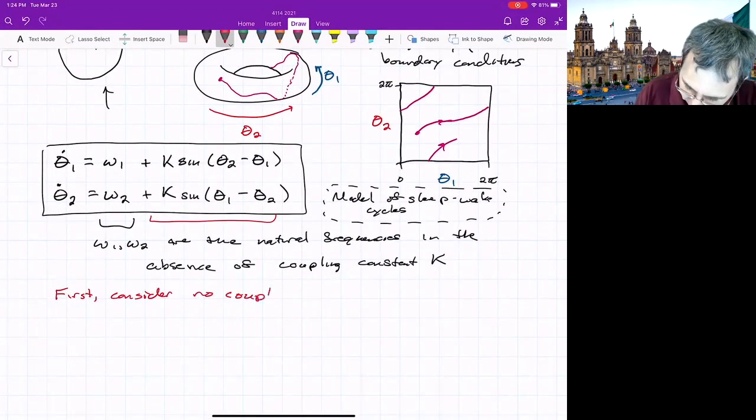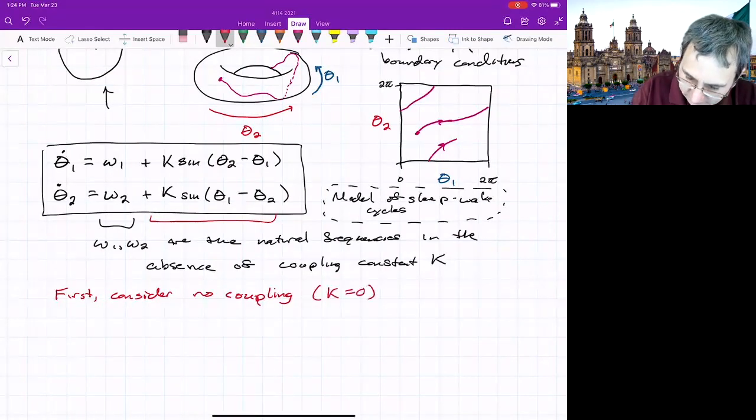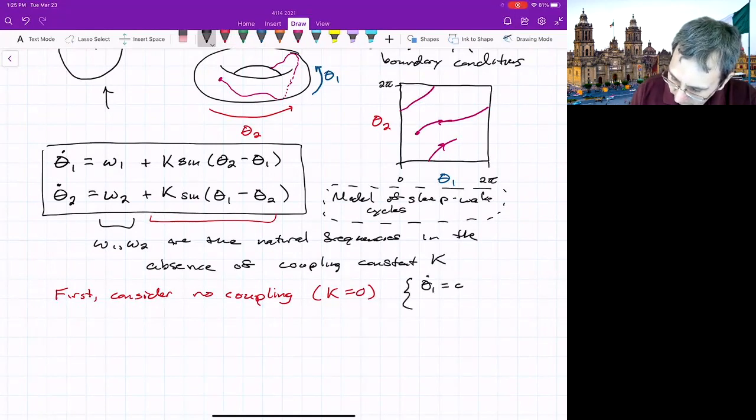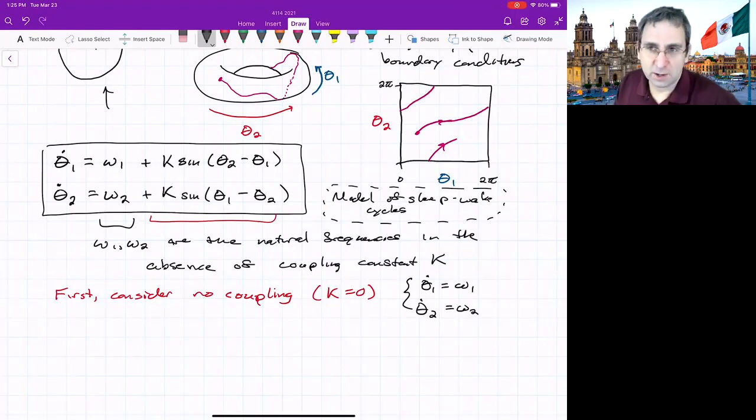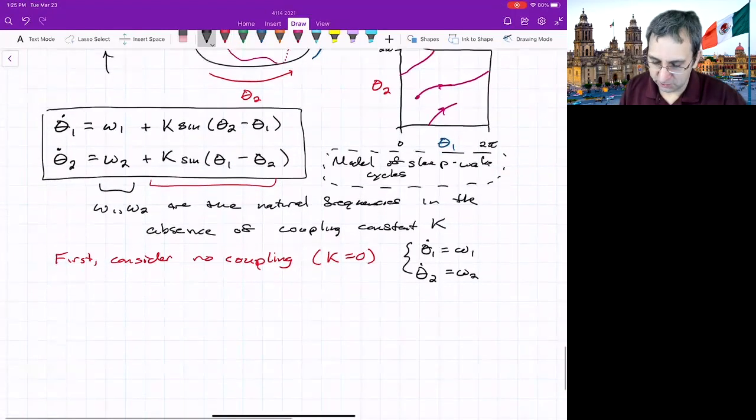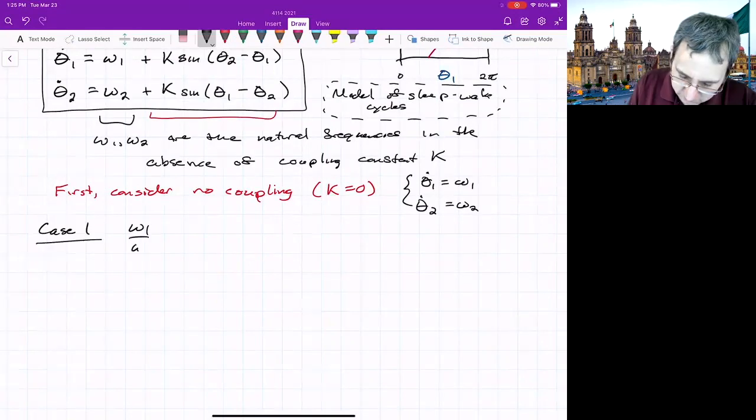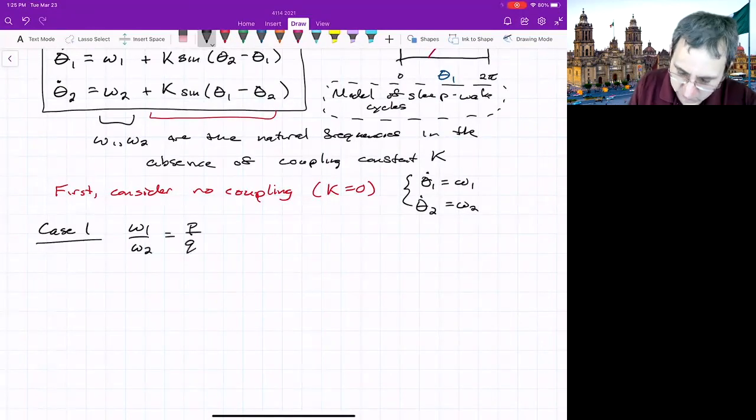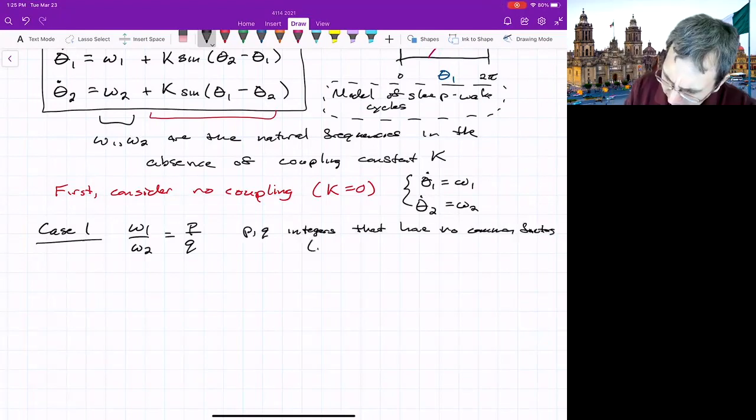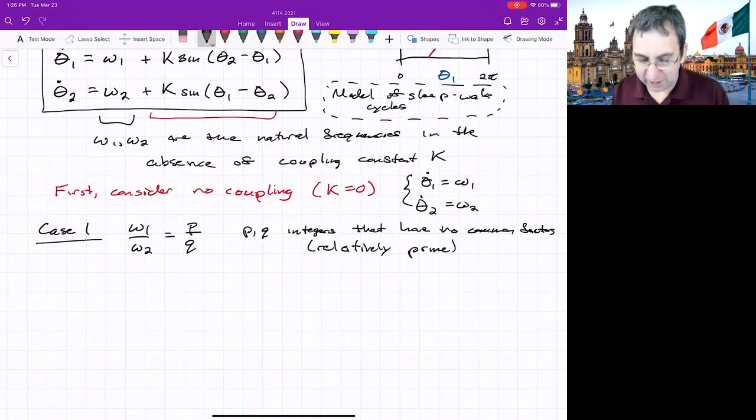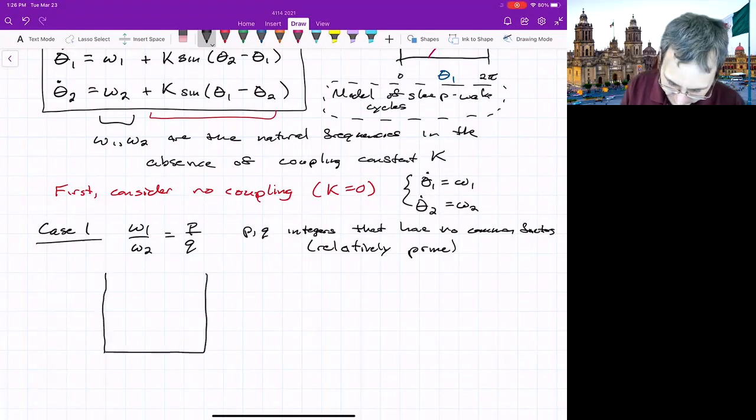We'll first look at the case of no coupling and describe that and then include some coupling. So first we'll just consider no coupling. That means k equals zero. And this becomes really simple. We've got theta one dot equals omega one, theta two dot equals omega two. But we'll have two different cases of what could happen depending on the ratio of omega one to omega two. In the first case, omega one over omega two is p over q, where p and q are integers that have no common factors. I think the word for that is relatively prime.